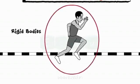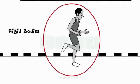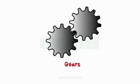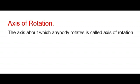Similarly, this running man is also an example of rigid body as he is not compressed. Also, gears, cams, and mechanisms are examples of rigid bodies.